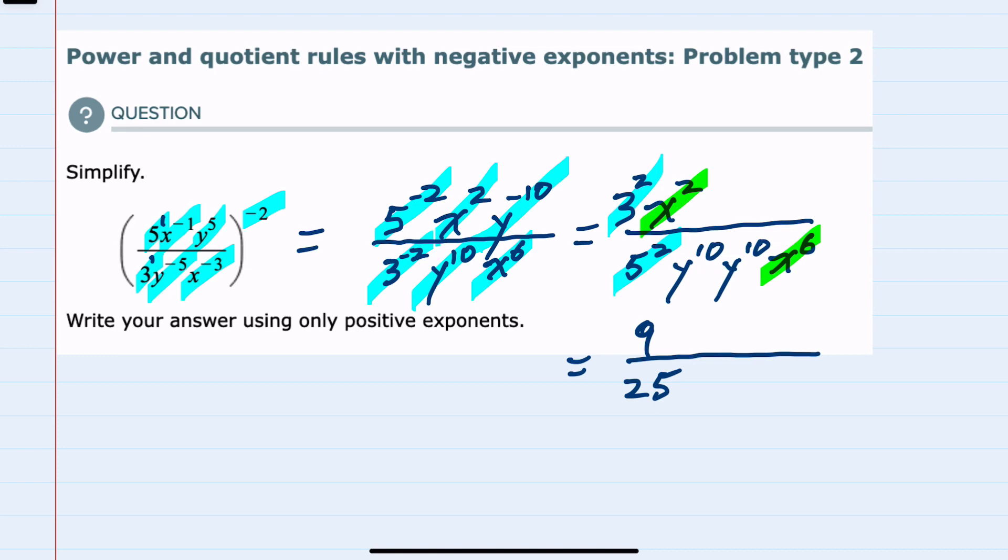Now looking at the x's, I have an x^2 in the top and an x^6 in the bottom. Our rule is that whenever the bases are the same, we can keep that base x in the numerator but I would subtract the exponents: so 2 minus 6 would be negative 4.